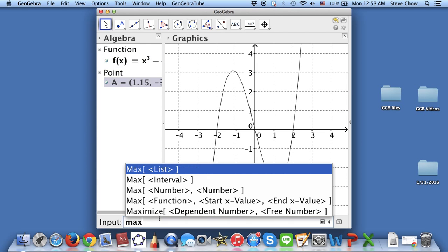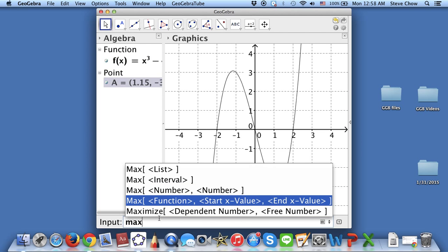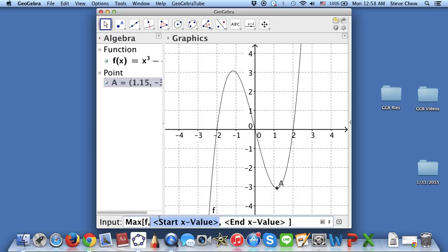Just press like max, and you're going to go to the one that has function. It's f, and then the starting x value, let me just, that's like left bound on your graphing calculator. Choose negative 2.